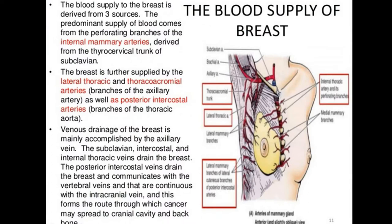The blood supply of the breast comes from three sources: branches from the axillary artery, the internal mammary artery which is a branch of the subclavian artery, and branches from the posterior intercostal arteries. The medial part of the breast is supplied by the internal mammary arteries, which are branches of the subclavian artery arising from the thoracoacromial trunk.